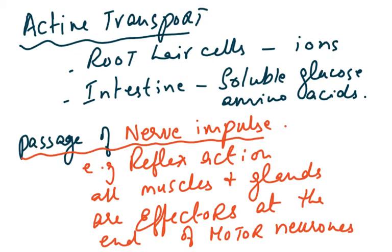Active transport is another use of energy in living organisms. For example, root hair cells take up ions by active transport, which requires energy from respiration — either aerobic or anaerobic. In the intestine, glucose and amino acids are absorbed into the bloodstream by active transport.